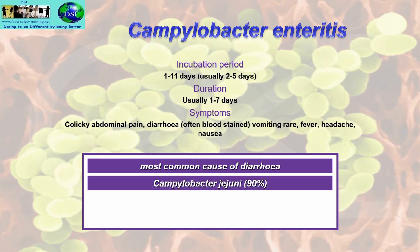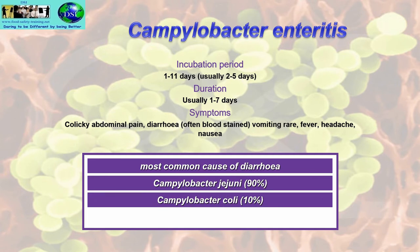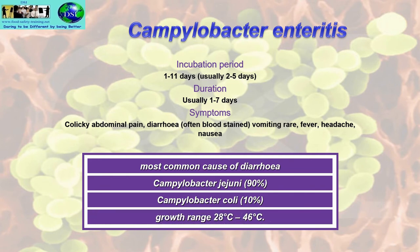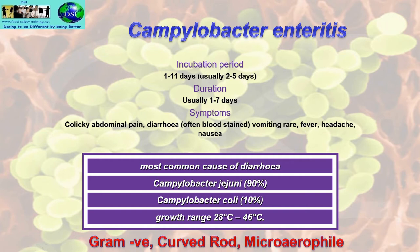Campylobacter jejuni accounts for 90% of cases and Campylobacter coli accounts for 10%. The growth range is 28°C to 46°C. Campylobacter enteritis — enteritis is not a particular serotype, it means inflammation of the gastrointestinal tract; the main serotypes are jejuni and coli. It is gram-negative, a curved rod, and a micro-aerophile, which means it requires oxygen but only small amounts, roughly about 5%.